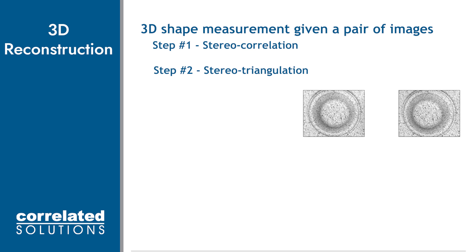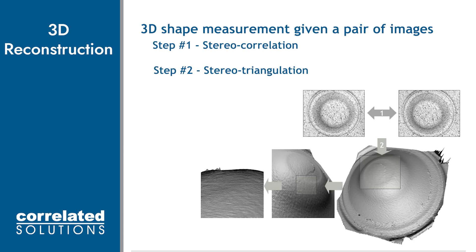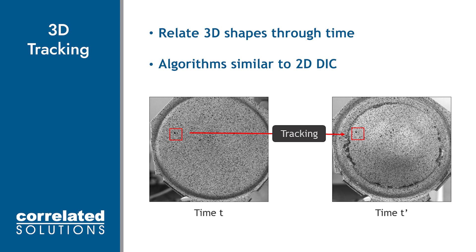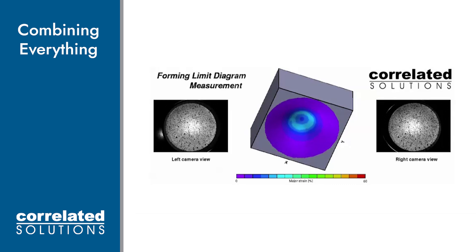And similarly, in 3D DIC, once we've used stereo correlation to match the subsets from right to left images, we use intersecting optical rays or epipolar projection lines for all of the subsets on the test surface to build the full field 3D surface. This is matching through stereo triangulation. So we build our 3D model, but we also track it throughout time with algorithms similar to 2D DIC. Combining what we know for 3D DIC: we match the subsets in the right and left image through stereo correlation, we track how the subset deforms throughout time, and we build the right and left image into a 3D shape using stereo triangulation. Once we perform those three steps, we can track 3D models from the right and left images like we see here.